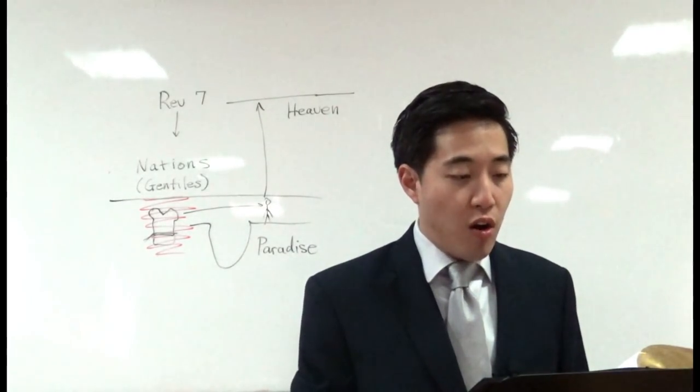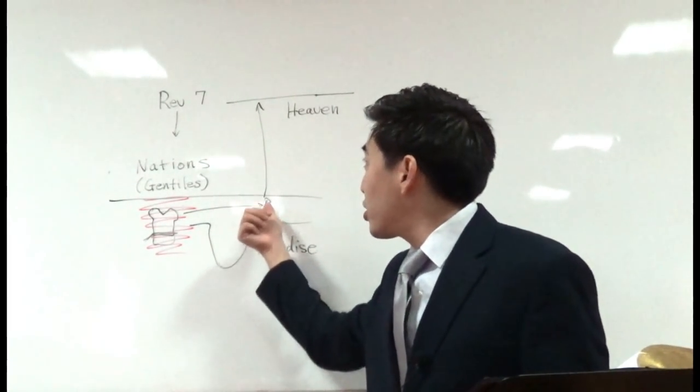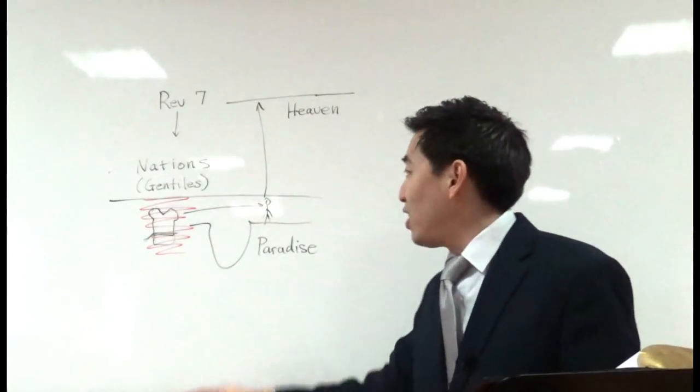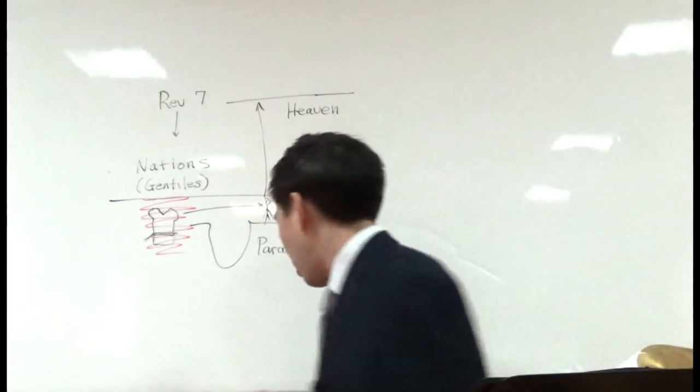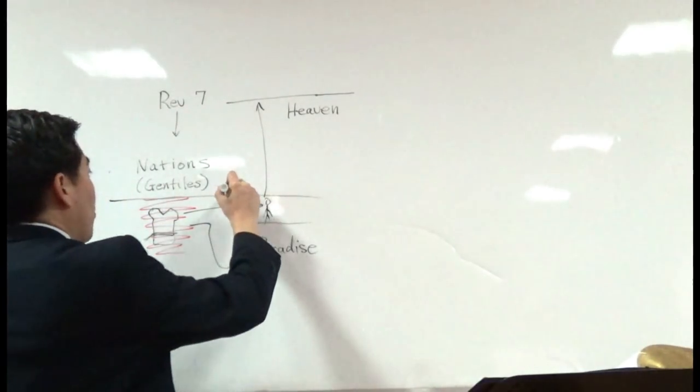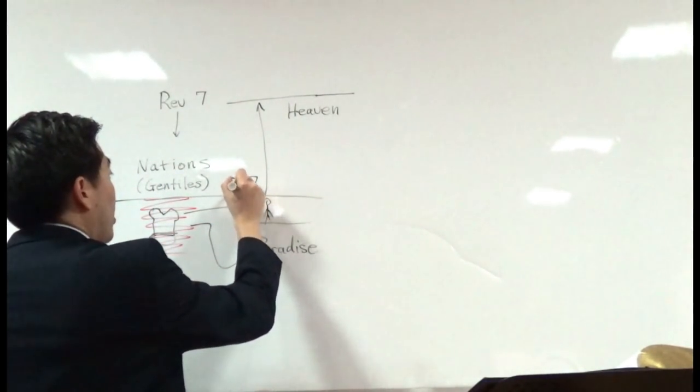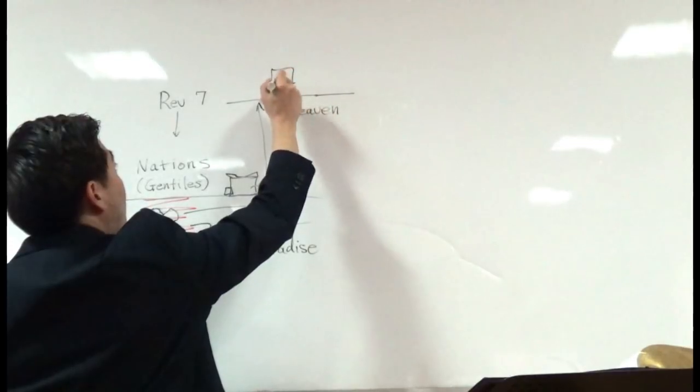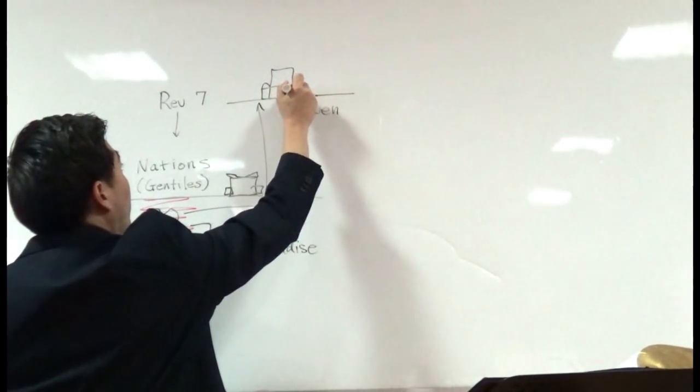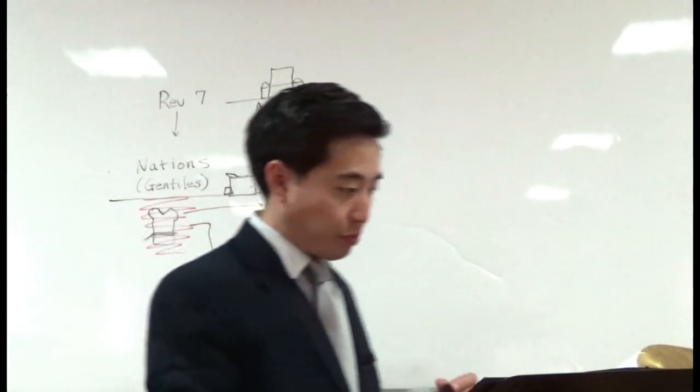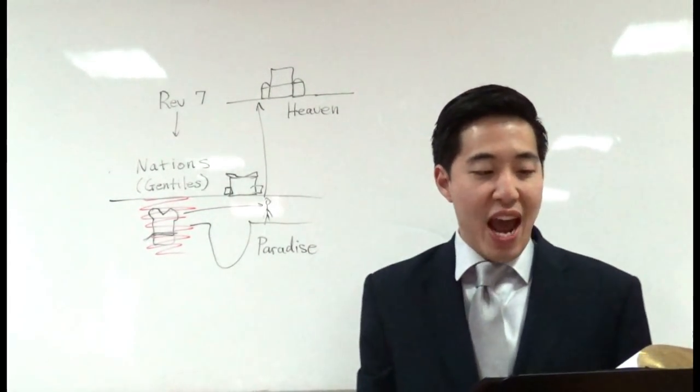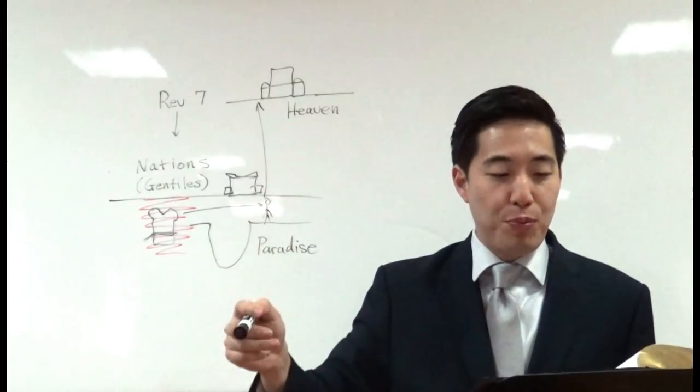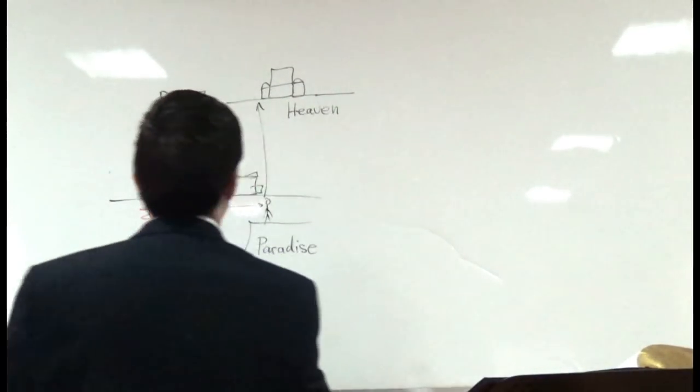Verse 15. Therefore are they, those tribulation saints, when they go up, before the throne of God and serve Him. Remember Revelation 6? They were below the altar, that's the altar on earth at Jerusalem. They were below. But now they're before the throne. That means they went up. What do they do before the throne? And serve Him day and night in His temple. So now they're serving God up in heaven. In His temple. So God has a temple up in heaven, that means.